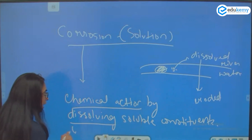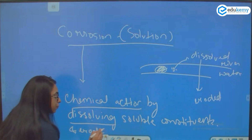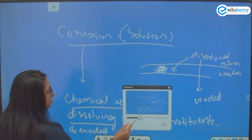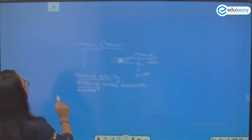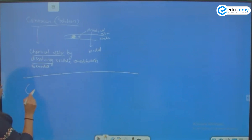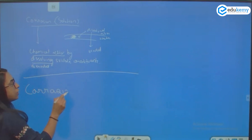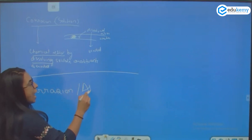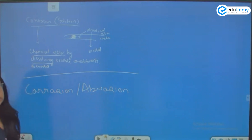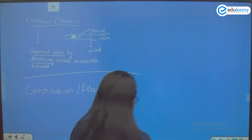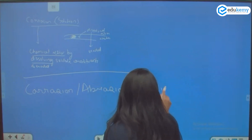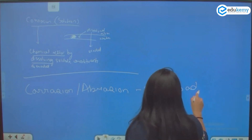Whatever is the soluble constituent, there is a chemical action and then it is dissolved and eroded — this is corrosion. Now, corrasion is also called abrasion. It is basically when the solid load in the river causes erosion.